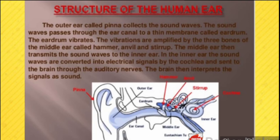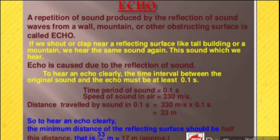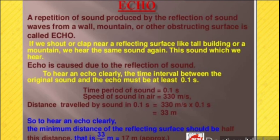An echo is the repetition of sound produced by the reflection of sound waves from a wall, mountain, or other surface. If you shout or clap near a reflecting surface like a tall building or mountain, you hear the same sound again — this is called an echo. To hear an echo clearly, the time interval between the original sound and the echo must be at least 0.1 second. With the speed of sound at 330 m/s, the minimum distance between the source and the reflecting surface should be approximately 17 meters.